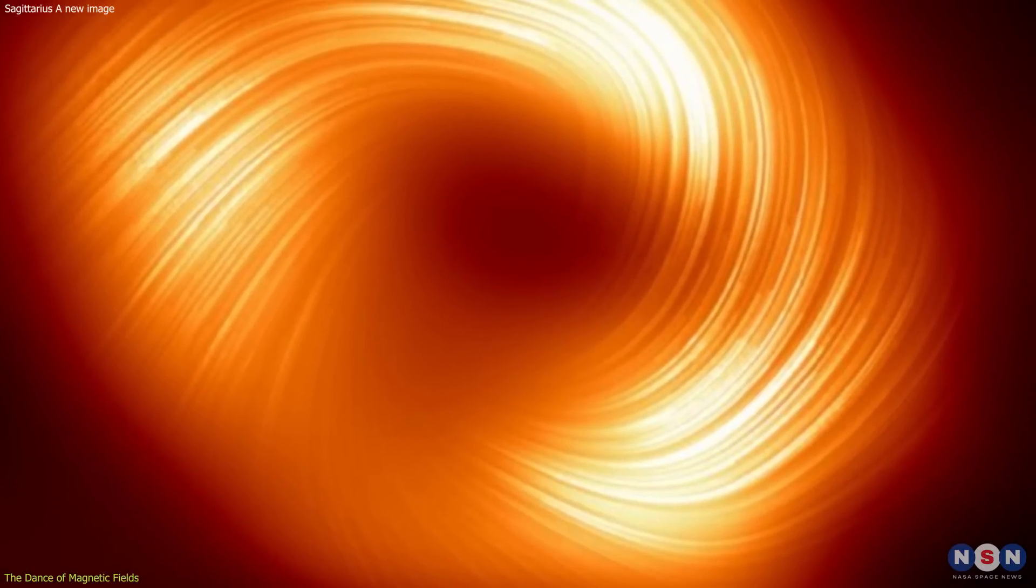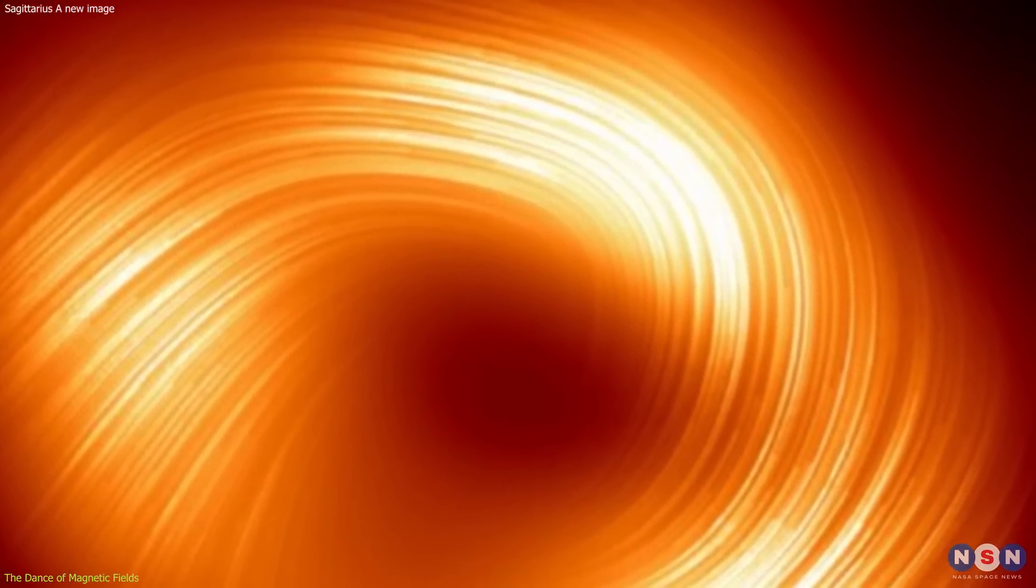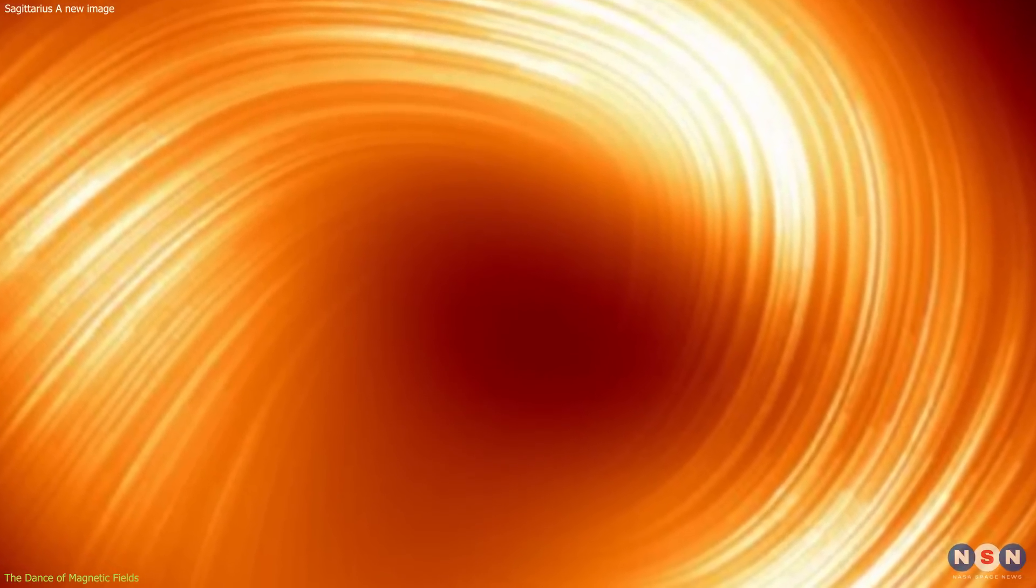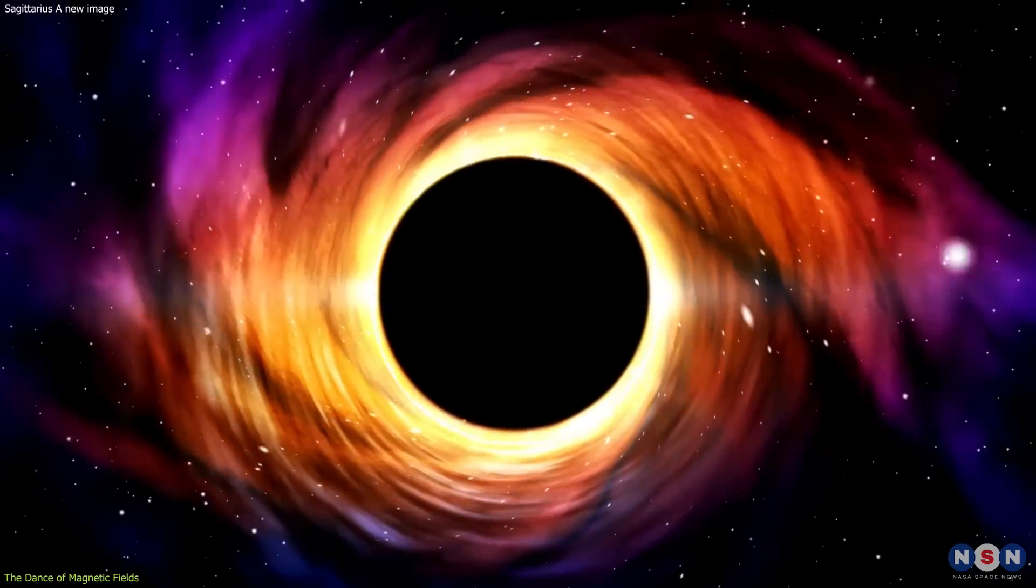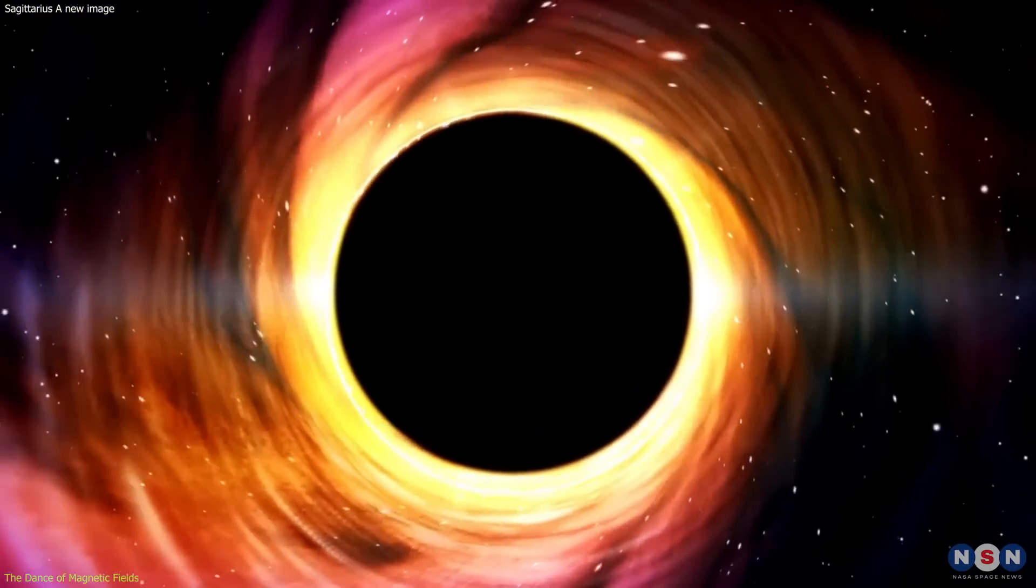The picture that emerges is one of complexity and contrast. Close to the black hole, the magnetic fields exhibit a chaotic nature, with loops and whirls intertwining like strands of spaghetti. This disorderly region is a hotbed of activity, where matter is heated to extreme temperatures as it spirals inward.